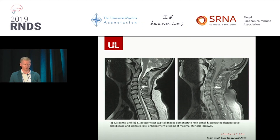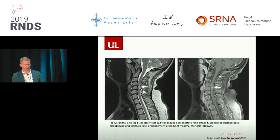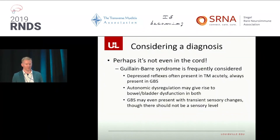This image shows what we call a compressive myelopathy. You can see the spine, the vertebral bones, and the disc spaces between them. Sometimes these discs rupture out into the space where the spinal cord is supposed to be — you can see the space is narrowed and the cord has signal change, so it's not happy. We call that a compressive myelopathy. And sometimes the problem isn't even in the spinal cord itself — like that first case where they thought she had a peripheral nerve or nerve root problem.